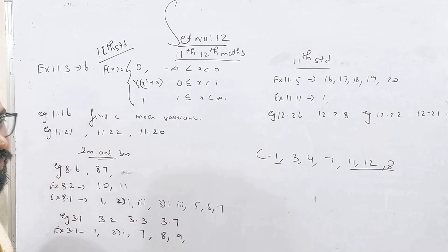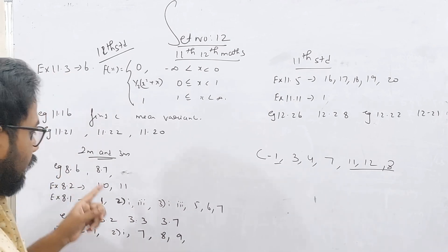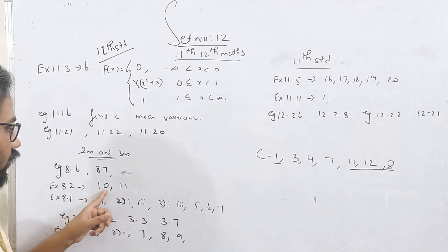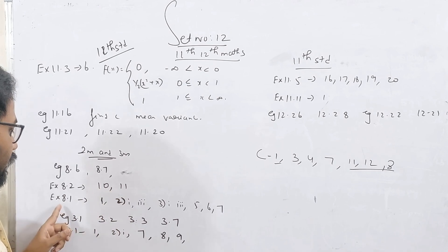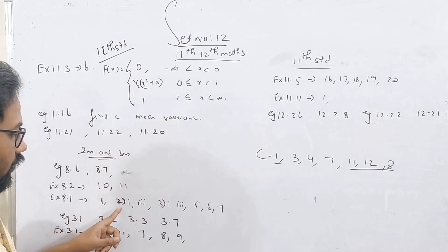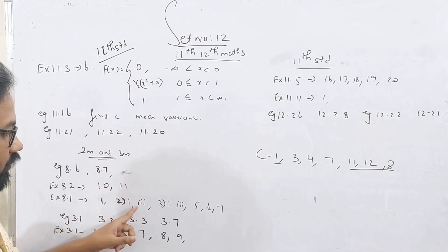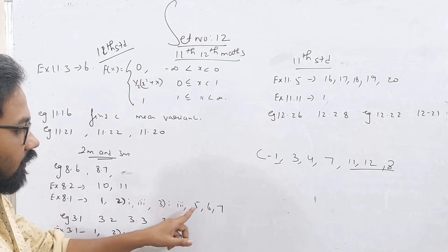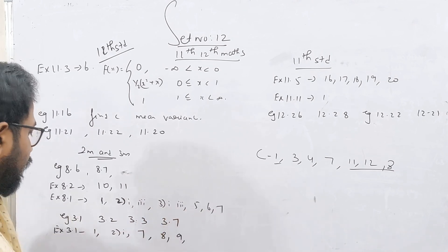Example 8.6, 8.7. X is 8.2, 10, 11. X is also 8.1, 1.2, 1.3, 1.5, and 6.7.